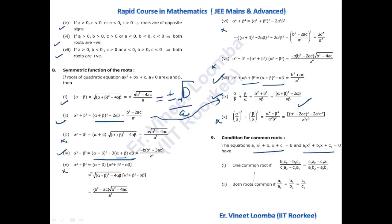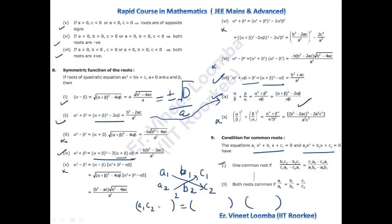Next is the condition for common roots between two quadratic equations. For one common root, you can set up a matrix-like arrangement: (a₁c₂ − a₂c₁)² = (a₁b₂ − a₂b₁)(b₁c₂ − b₂c₁). If both roots are common, the condition is simply: a₁/a₂ = b₁/b₂ = c₁/c₂.